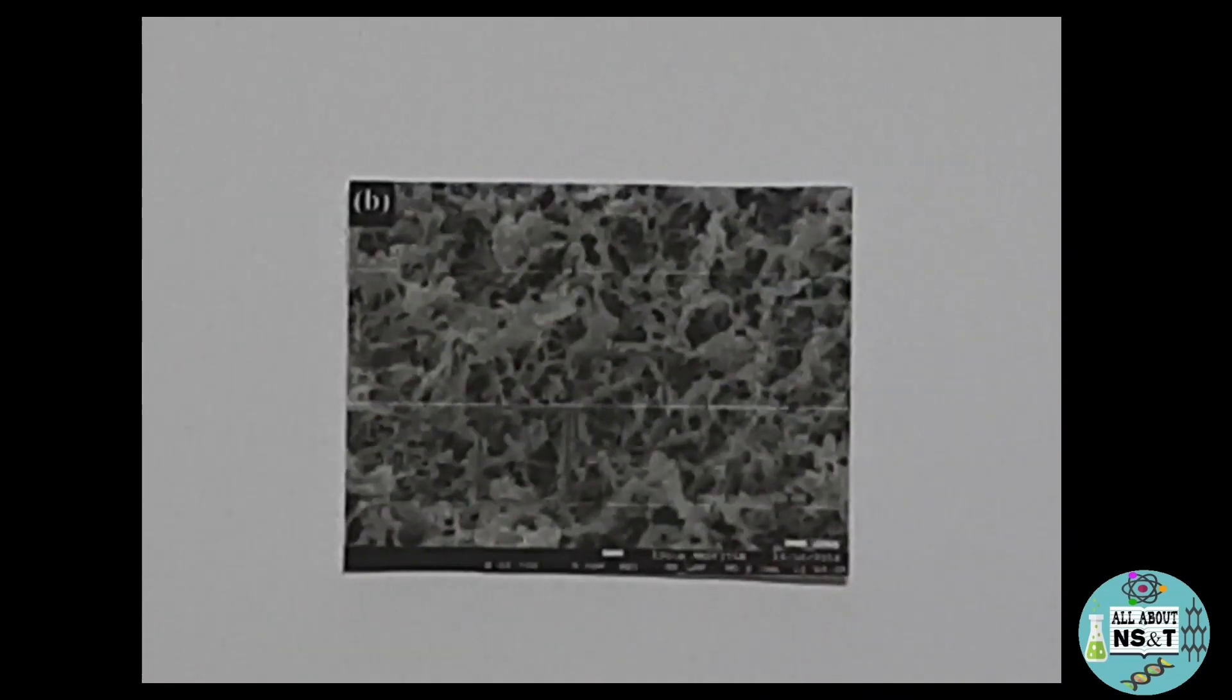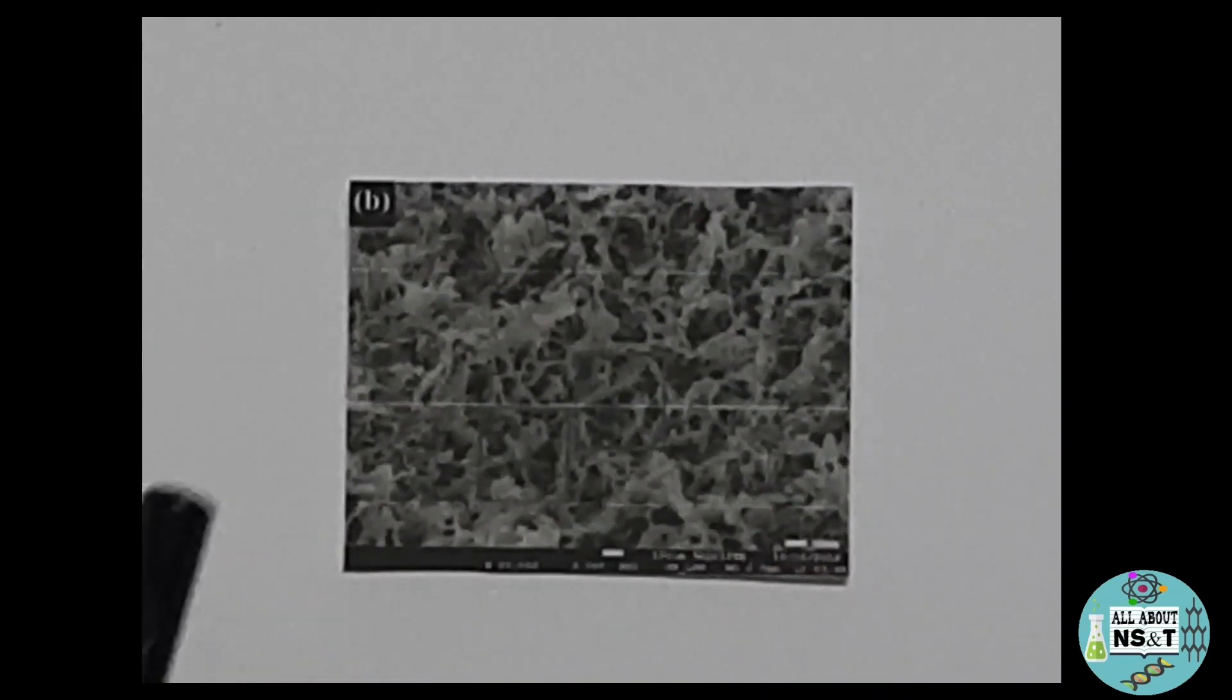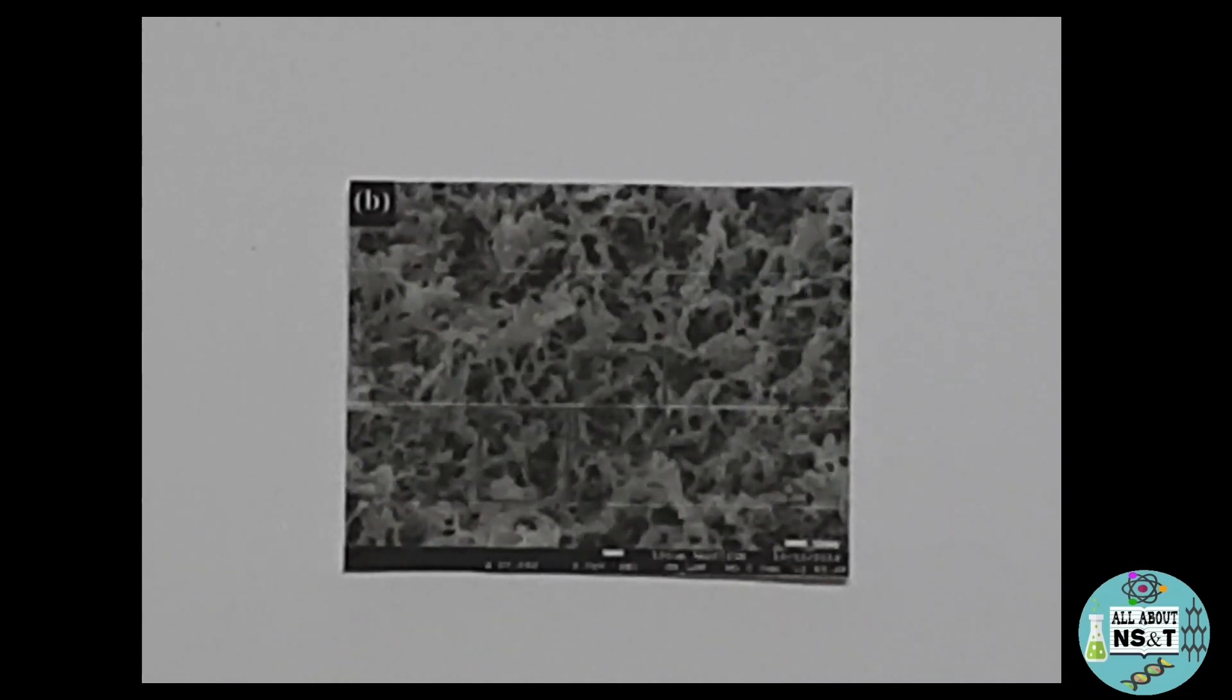So for reference, you can see this is the SEM image of carbon nanotubes. So this is how carbon nanotubes appear under scanning electron microscope. However, SEM images are black and white because they are created without light waves. So that's why SEM images appear black and white.